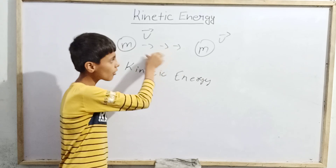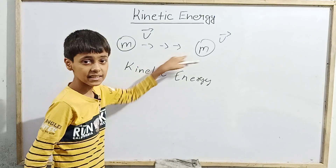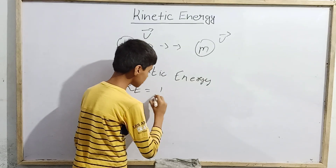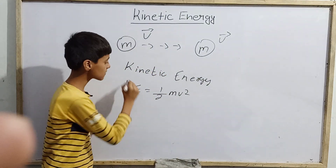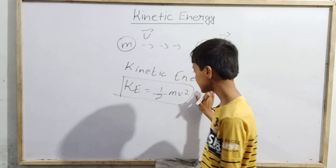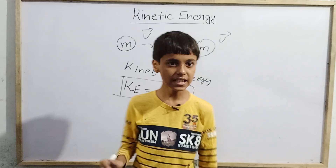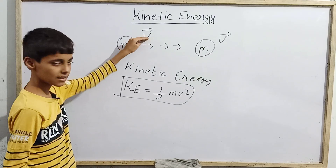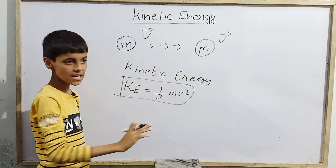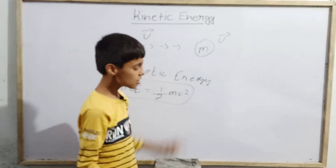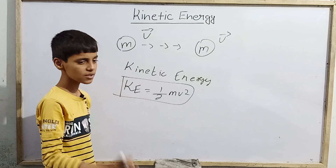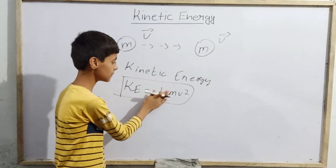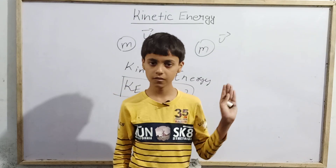Now, if I ask for the value of kinetic energy present in the ball, how do we calculate it? The value of kinetic energy is defined as KE = ½mv². This is a very important equation. Here m is the mass of the ball and v is the velocity. Note that velocity is a vector quantity, indicated by the arrow, but we use its magnitude in the formula. So kinetic energy equals ½mv².